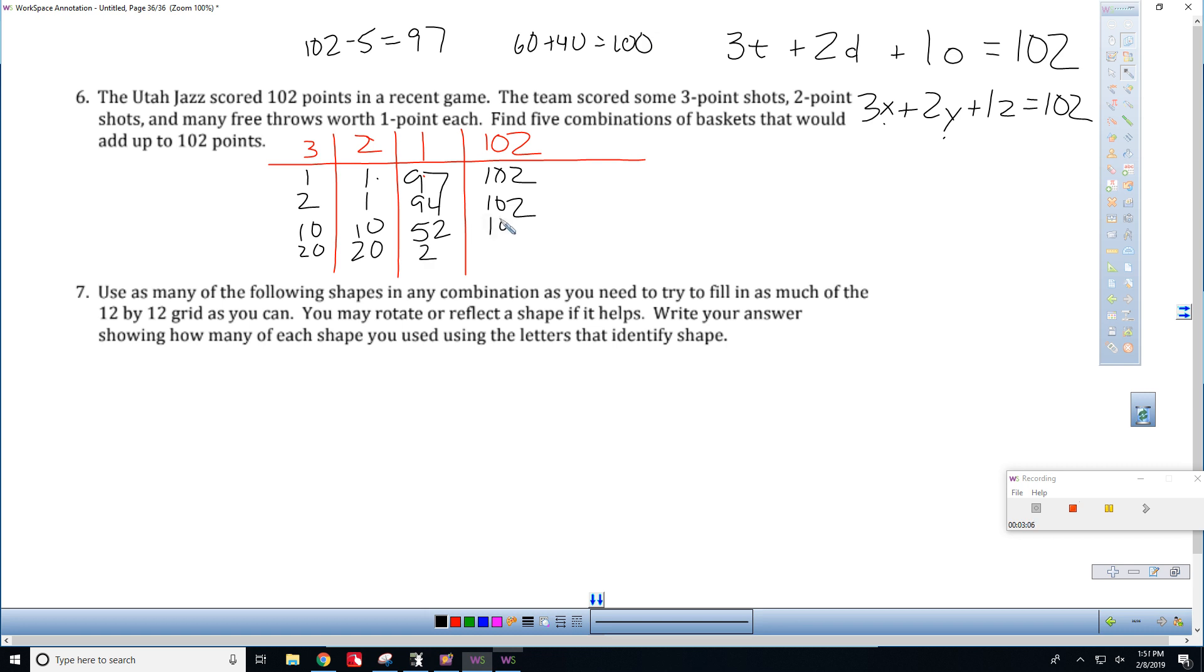So that's the most we can go. Let's do something like, how about 20 and 10? 23s is 60, 10 twos is 20. 60 plus 20 is 80, and then do 102 minus 80, and that gives you 22 free throws.